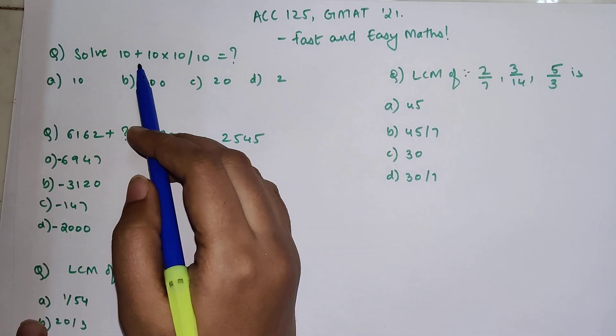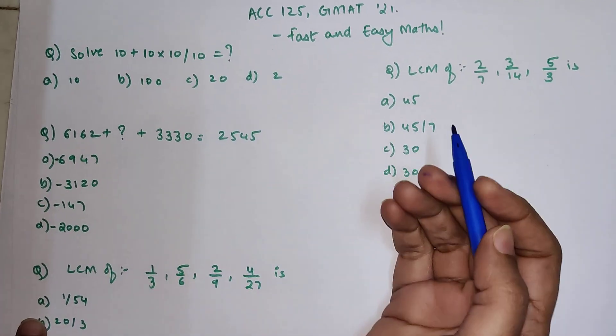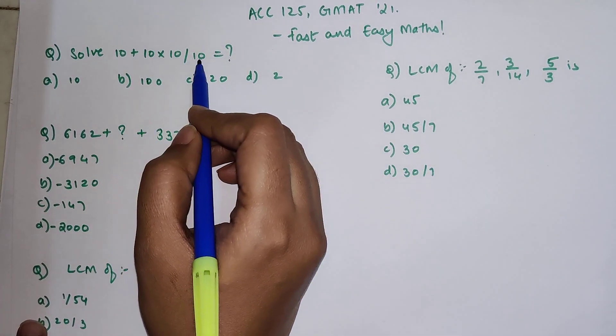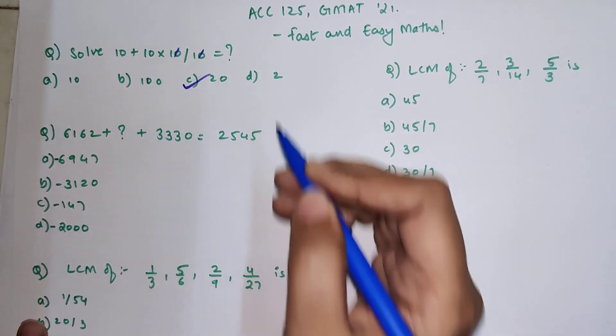So let's start with the first one. We have 10 plus 10 into 10 upon 10 is equal to what? Now very simple, 10 into 10 upon 10 can be directly cancelled.